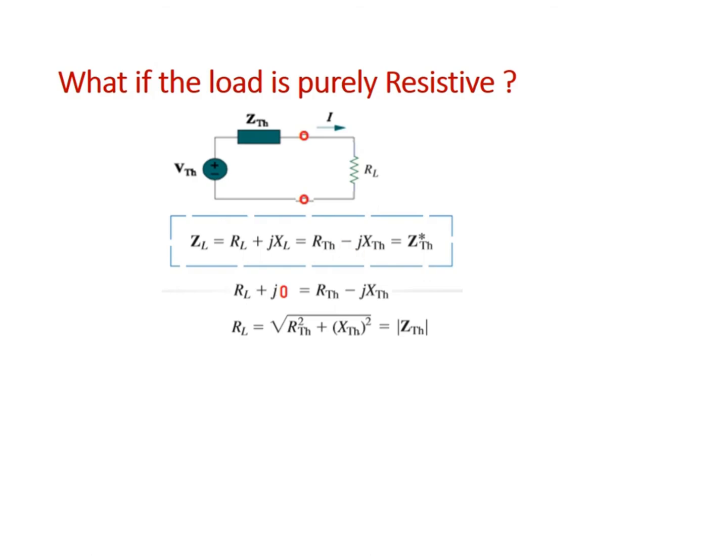In this case, since we only have resistance in the load, X_load becomes zero. We cannot equate a real term with an imaginary term, therefore we take the magnitude. R_L should equal the square root of R_Thevenin squared plus X_Thevenin squared, or the magnitude of Z_Thevenin.